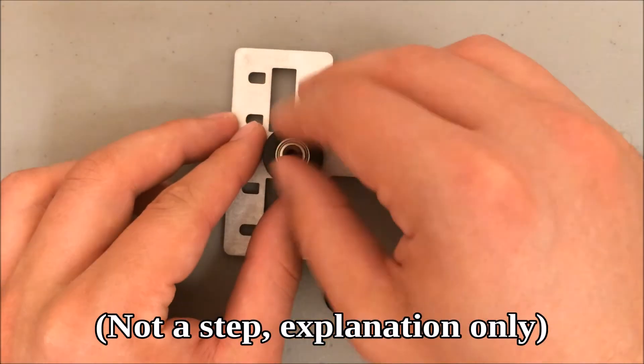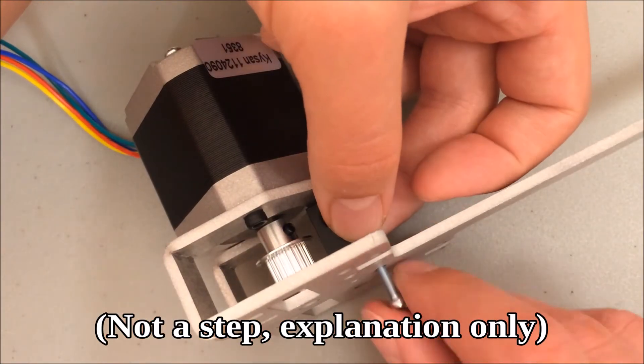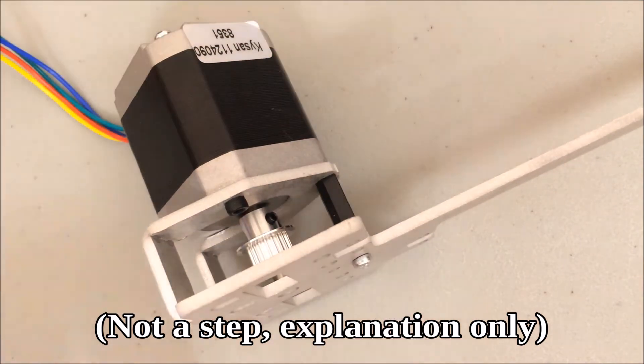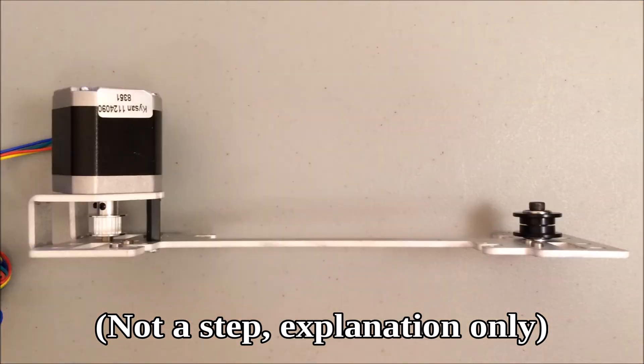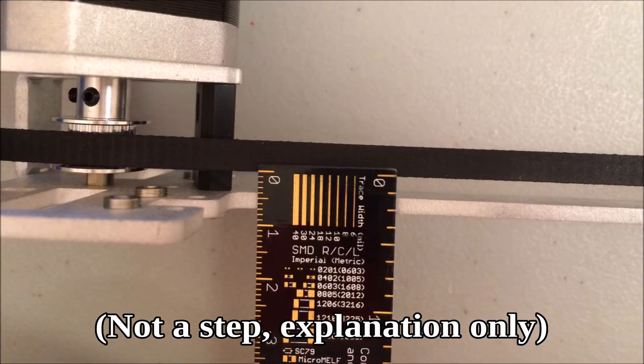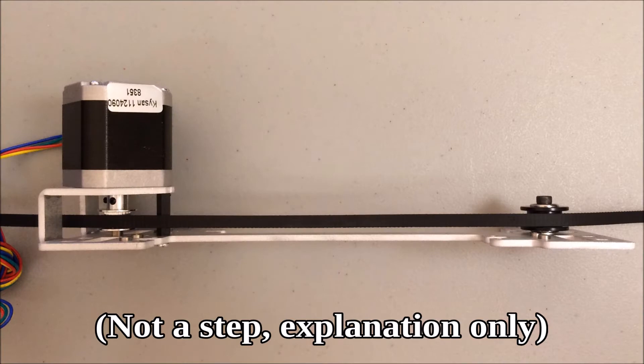I installed the Delrin idler pulley first so I could compare the depth and before finalizing the motor pulley height I attached the x-axis motor through the Delrin block that squares up the frame. Then I compared the depth of the motor pulley and the idler. I draped the GT2 belt across the two pulleys and measured the distance from the frame to the belt. I had to check that the left side and the right side were equal measurements.